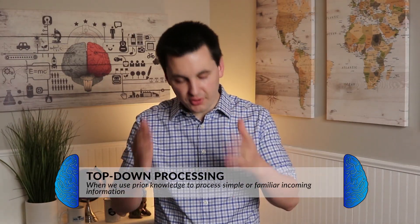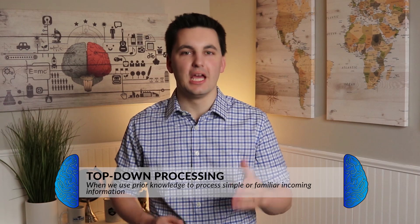Next is top-down processing, a concept we've talked about in unit three. This is when we use our prior knowledge to interpret the information. For example, when you're proofreading a paper you write, you might miss simple mistakes because you know what the paper is supposed to say, and you auto-correct the mistakes in your mind without even realizing it. Your brain is quickly processing the information and isn't clearly thinking it through.